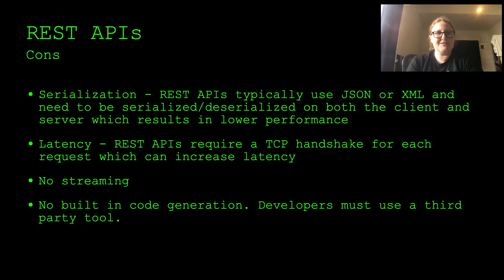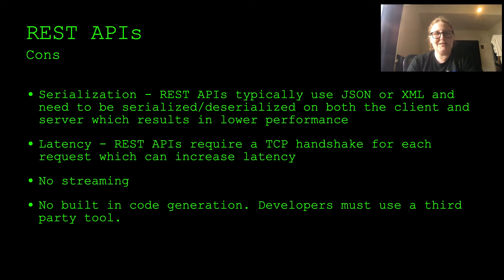There are some drawbacks of REST APIs. Because they use JSON or XML, data needs to be serialized and deserialized on both the client and server, which results in lower performance. There's also additional latency because REST APIs require a TCP handshake for each request. REST APIs also can't make use of HTTP/2 streaming — there's no streaming available — and there's no built-in code generation, so developers must use a third-party tool like Swagger.